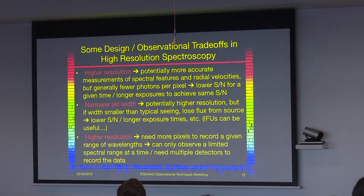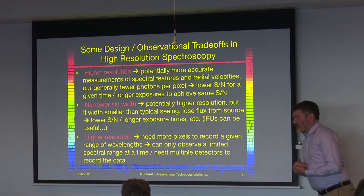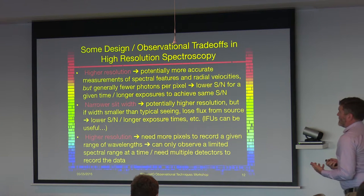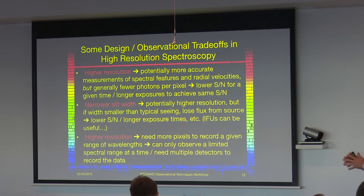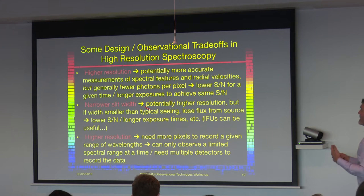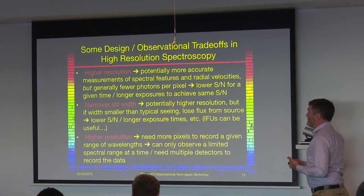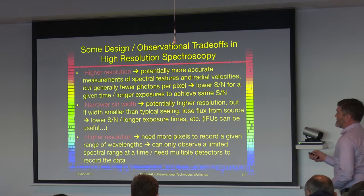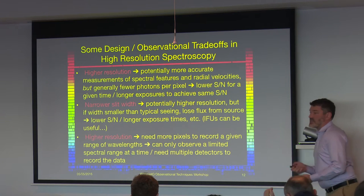So some of the trade-offs in high resolution spectroscopy. You might think, well, why don't we just go for a really high resolution, because then you can resolve everything and get ultra-precise radial velocities. But the problem is that you're then spreading out, for a given object, the same amount of light over more pixels, or most importantly, you're getting fewer photons per pixel. So that means that for a given time you're going to get lower signal to noise, or, flip side, you'll need longer exposures to get the same signal to noise.